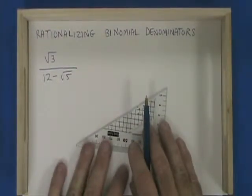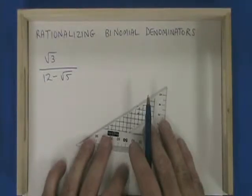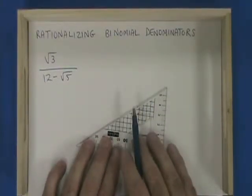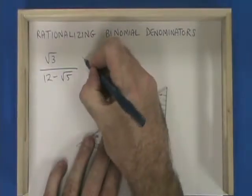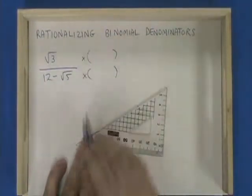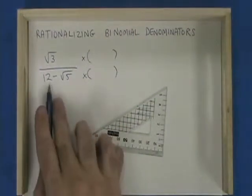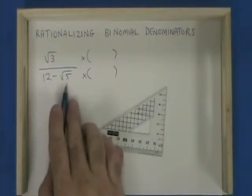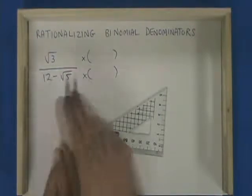Let's move on to a fraction that has a binomial denominator that has a radical. We are going to multiply both top and bottom of this fraction with the binomial 12 plus root 5. Same first term, same second term, opposite sign.